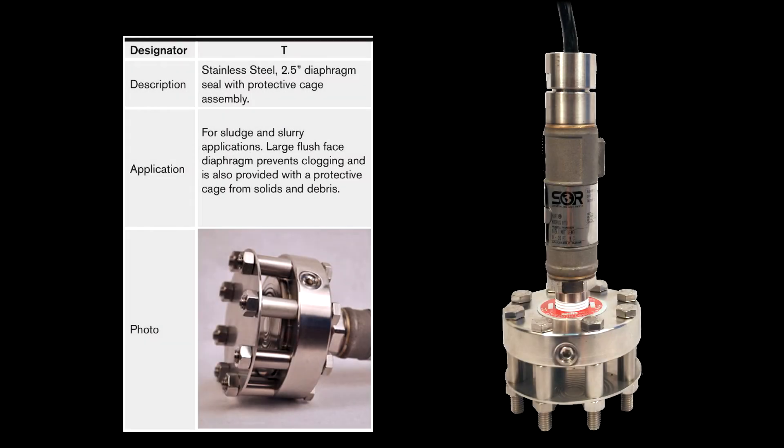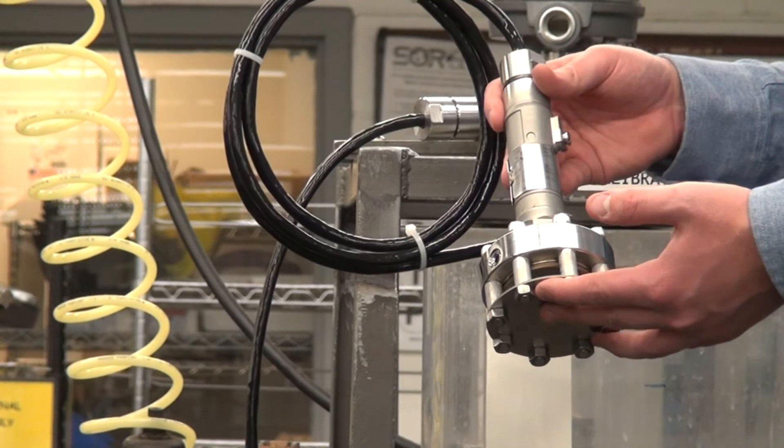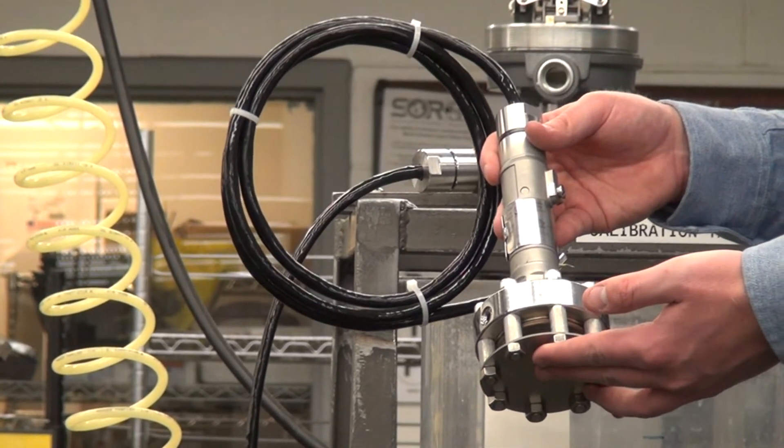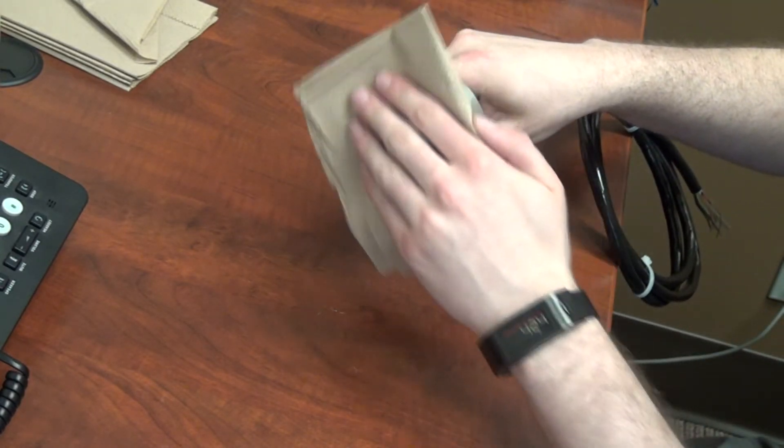The third option we have is a cage diaphragm seal option. The cage diaphragm seal option incorporates a 2.5 inch flush face diaphragm seal. This is good for applications that contain sludges or slurries that can potentially build up on the inside of the process connection. This way you can easily clean the face of the surface without any issues.